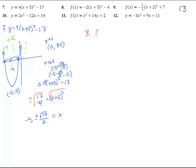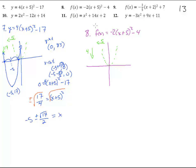Number 8. We have f of x equals negative 2 times the quantity x plus 5 squared minus 4. Very similar to what we had before, so I'll do the graph first. Here we have x squared, and it's going to be moved that way 5. It's going to be moved down 4, and this coefficient is going to flip it and make it 2 times as tall. So before moving it down 4, it goes over 5, then flips over and becomes twice as tall. And then down 4 — so it should look about like that.